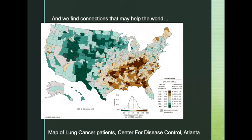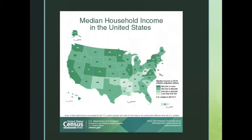Now we find other connections that may help the world. The map that you have in front of you now is a map of lung cancer patients, and you will notice that this map shows a very high concentration of people who smoke, and that it is in the same locations as where there is a high amount of obesity in the United States. We will also look at median household income in the United States, and what you will notice is the more McDonald's and the more obesity and the more lung cancer there is, there is a lower amount of median household income. So when we look at all these maps, we have a better understanding of how the world operates.